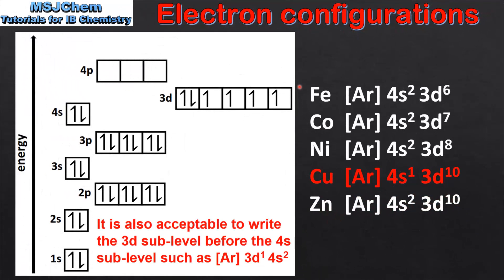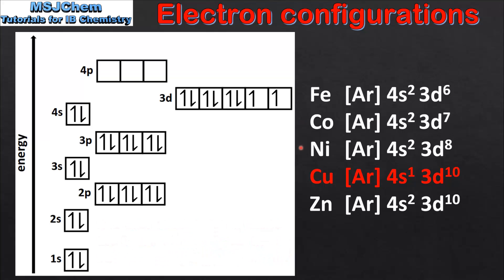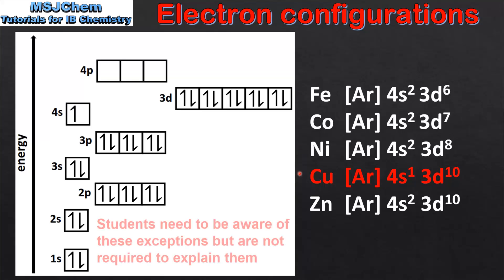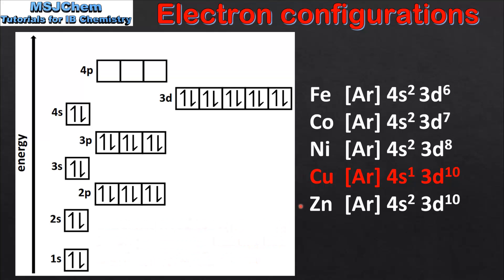Next we look at the electron configurations of the remaining d-block elements. Starting with iron which is Ar4s2 3d6. Next is cobalt which is Ar4s2 3d7. Moving on to nickel which is Ar4s2 3d8. Here we have our second exception to the Aufbau principle: the electron configuration of copper is Ar4s1 3d10, so we have 1 electron in the 4s sub level and 10 electrons in the 3d sub level. And to end the d block we have zinc which is Ar4s2 3d10 — we have now completed the 3d sub level.